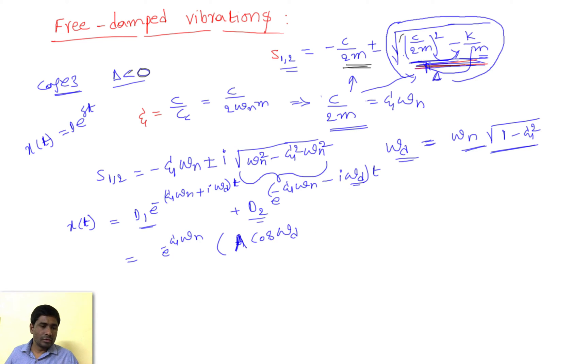I'm directly writing here with the new variables: A into cos omega d—actually here we have omega d. If you observe, i is before this term. Here t is missing, so omega d into t plus phi.